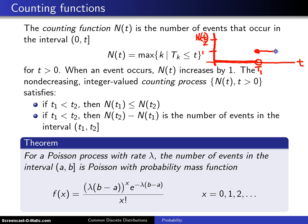And it will remain at 1 until there is another event. And let's say that next event occurs right here at t2. And at that point, it will jump up to 2 and so on.